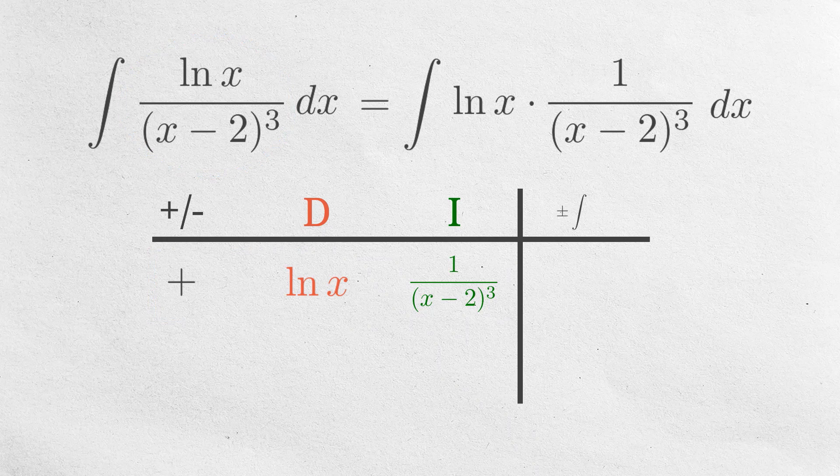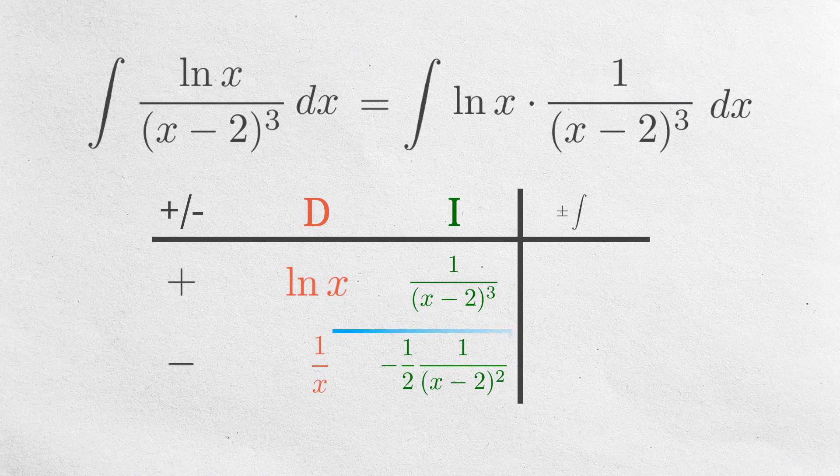Okay, now we can go down the columns. For this first column, the signs will alternate, so we get a minus sign here. Then taking the derivative of ln x, we get 1 over x. Next, integrating 1 over the cube of x minus 2, we get negative 1 half times 1 over the square of x minus 2. So, multiplying everything in this row, we get this integral.